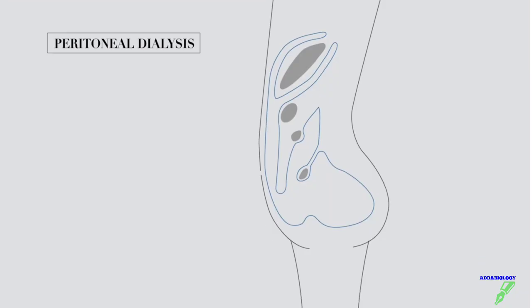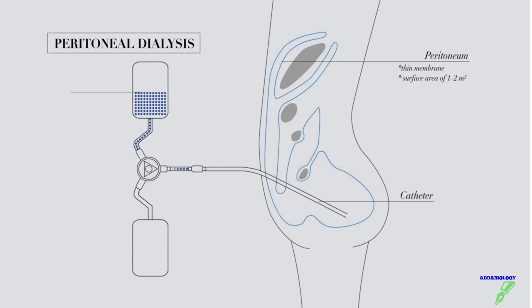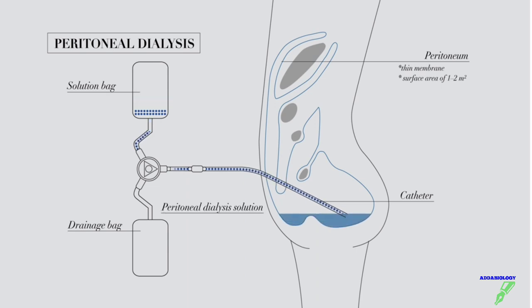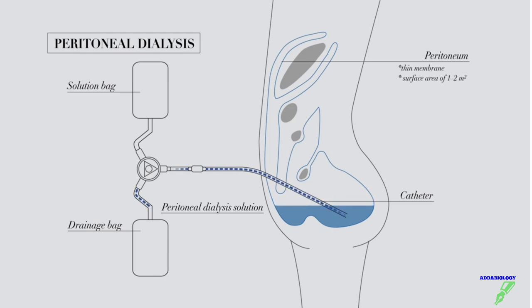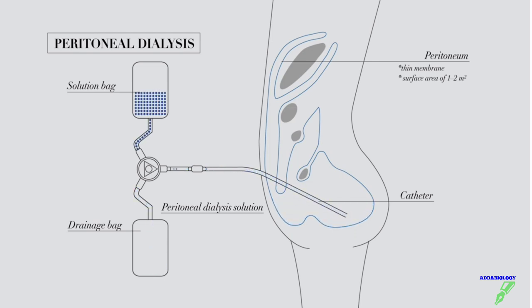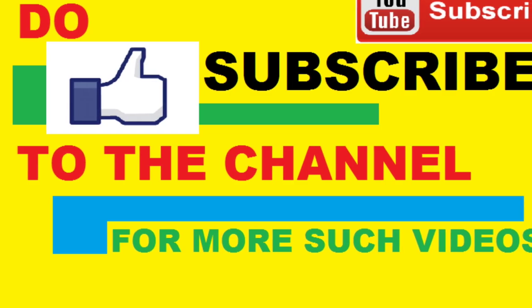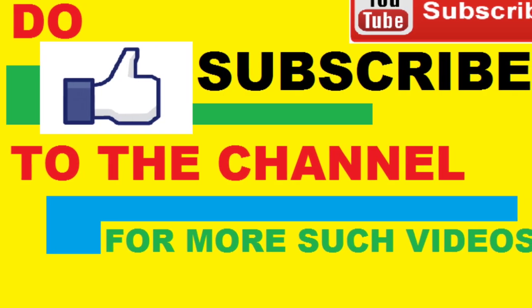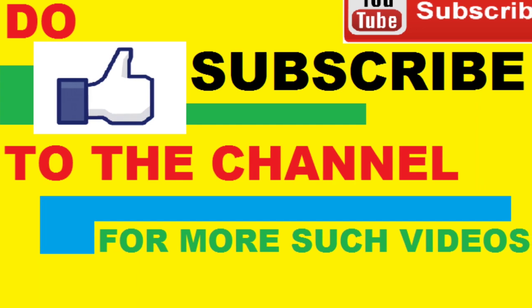The doctor makes a cut in the lower abdominal area into the peritoneal chamber. The dialyzing fluid is added; the peritoneal membrane removes all nitrogenous waste, adds essential salts, and the used dialyzing fluid is then sucked out. This is how peritoneal dialysis is done — hope students have understood the concept of dialysis in an easy way.